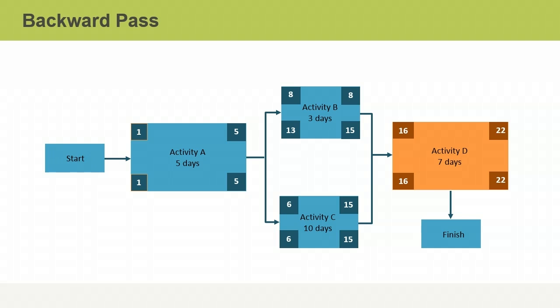The late start date should be the same as the early start date for the first activity in a schedule network diagram. Any other result may indicate that you have made an error.